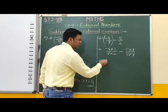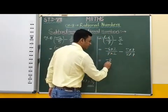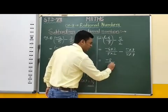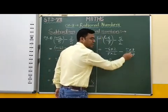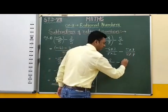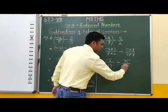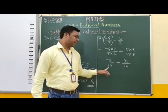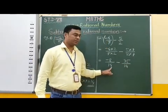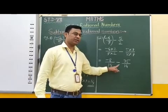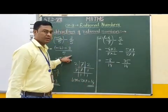Therefore, the multiplication gives: minus 4 into 2 equals minus 8, and 7 into 2 equals 14. Now the subtraction sign, then 5 into 7 equals 35, and 2 into 7 equals 14. Now students, if you observe here, the denominators are the same, so we can subtract these two rational numbers using this method.